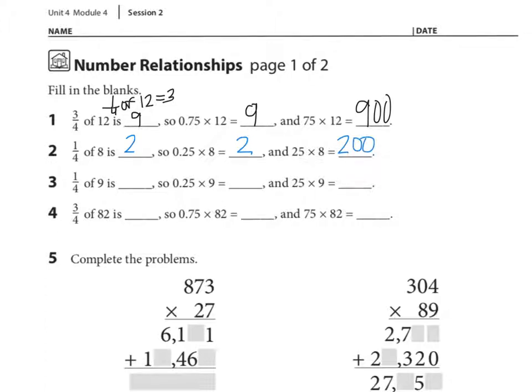Let's look at number 3, 1 fourth of 9. Now, if 1 fourth of 8 is 2, I know 9 is 1 more than 8. So what's 1 fourth of that 1 whole? You're right, 25 hundredths. And so my answer is going to be 2 and 25 hundredths.